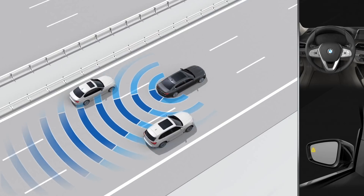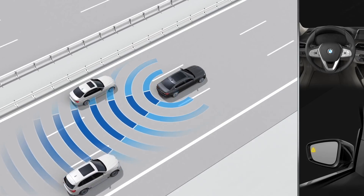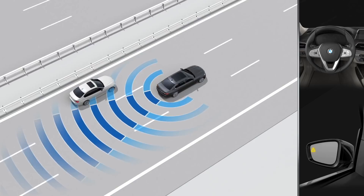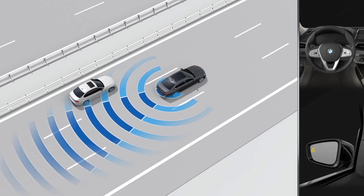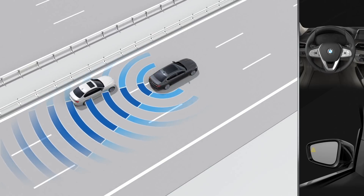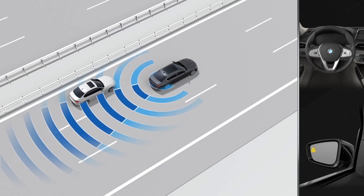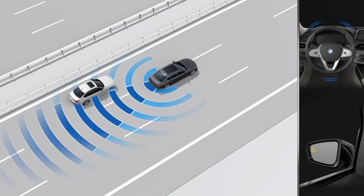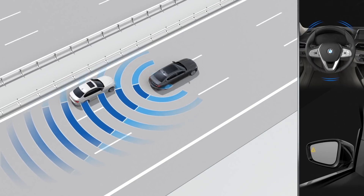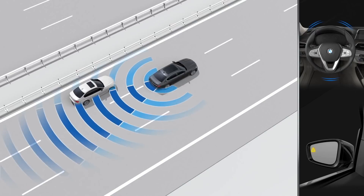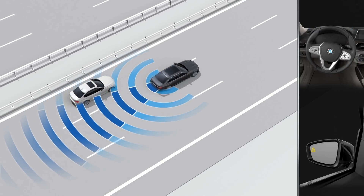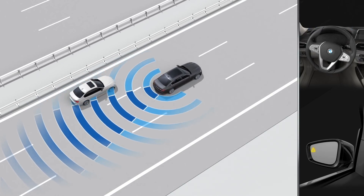If you activate the turn signal in such a situation and thereby indicate your intent to change lanes, a warning will be displayed. The warning symbol on the outside mirror will begin to flash and the steering wheel will vibrate.